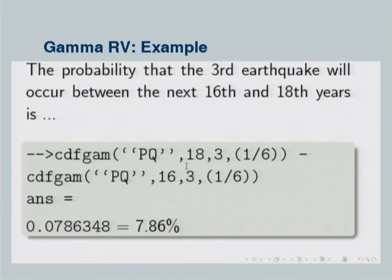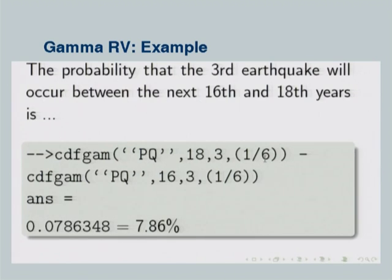We can also find the probability that the third earthquake will occur between year 16 and year 18: that is CDF of T3 at 18 minus CDF of T3 at 16, with K = 3 and V = 1/6. Using cdfgam, we get 0.0786, meaning a 7.86 percent probability.